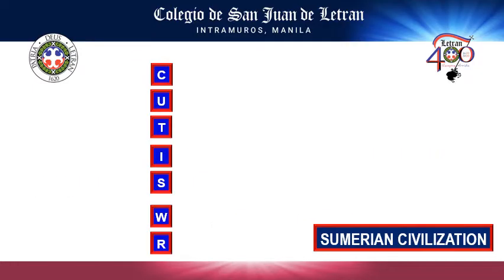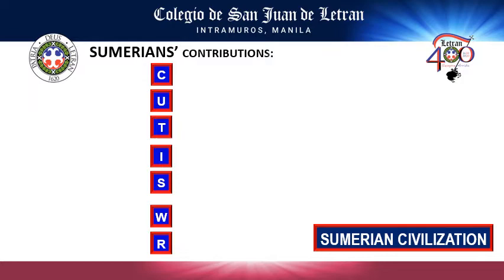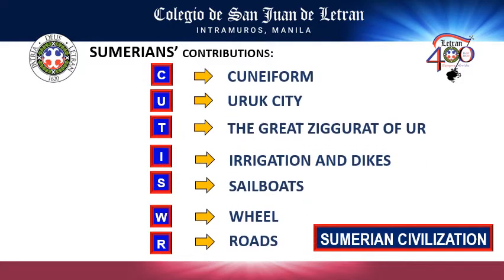Now let's look at Sumerian contributions. Just remember the acronym Kutis WR: C stands for Cuneiform, U stands for Uruk City, T stands for The Great Ziggurat of Ur, I stands for Irrigation and Dikes, S stands for Sailboats, W stands for Wheel, and R stands for Roads.